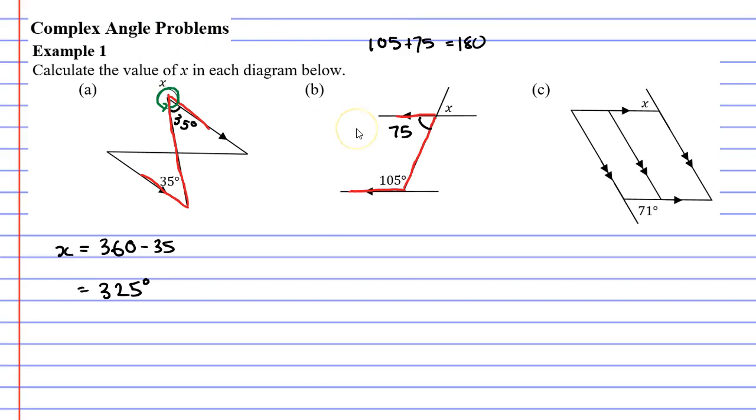Now, when I look at it, I'll notice I've actually got vertically opposite angles. I've got two sides that intersect at a point, which means that the x, which is opposite the 75, must be 75 degrees as well. So I'm just going to write that down below, x equals 75 degrees.